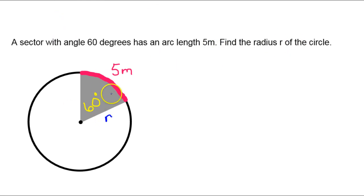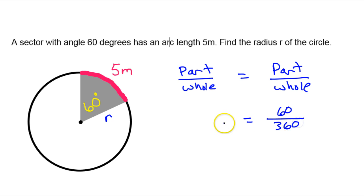So I've gone ahead and drawn a picture of that. What we know is that part over whole equals part over whole. On the right-hand side, we will do degrees. So I want the partial degrees over the total degrees. The partial degrees, meaning the sector, we have 60. The total degrees, the whole, of course, is 360 degrees in the whole circle.